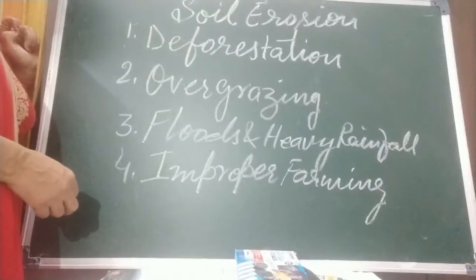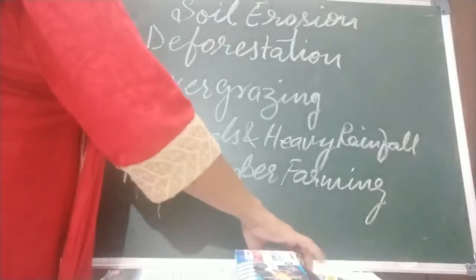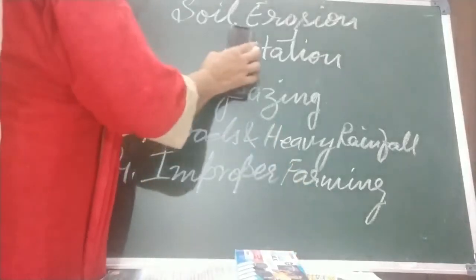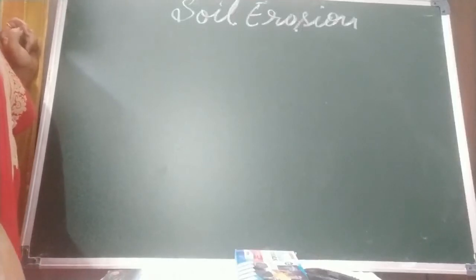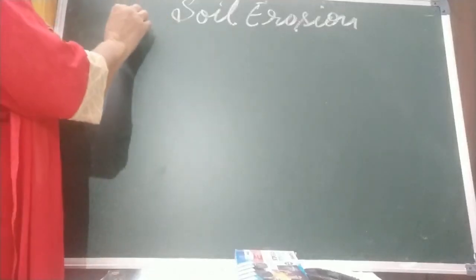So those are the four causes. Now let's discuss prevention of soil erosion. If we remove each cause, that becomes the prevention. The reduction or prevention of soil erosion is called soil conservation.